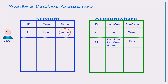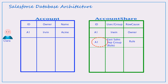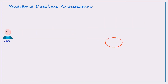Let's see how Salesforce provides the access. When Clara requests access to the record by providing the record ID A1, Salesforce checks in the account table and finds the record. Once a match is found, it checks in the account share table by matching the same ID and finds a record that gives access to the East sales group. Now Salesforce needs to look if Clara is part of that group.